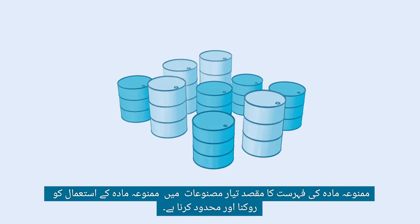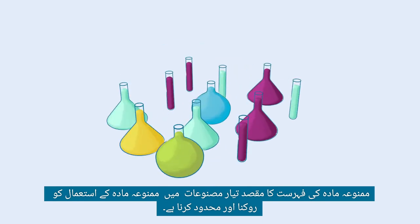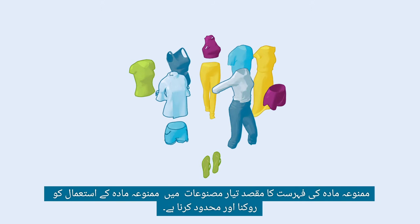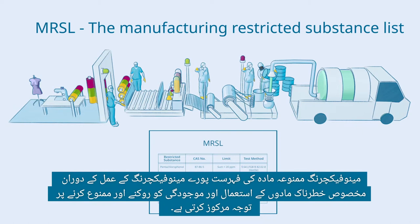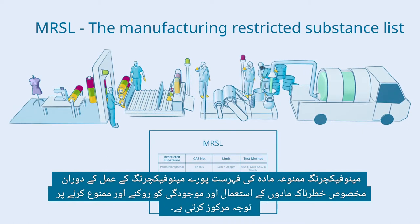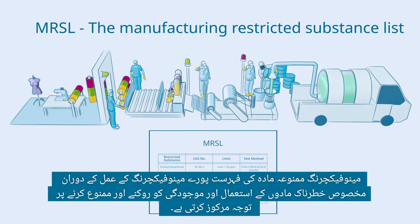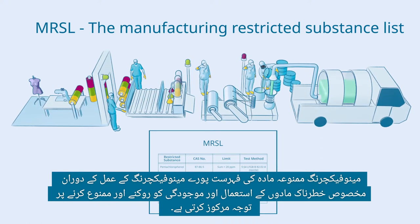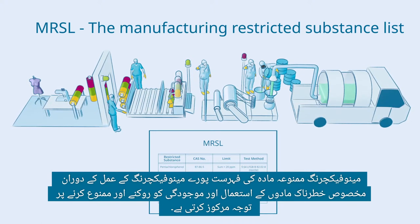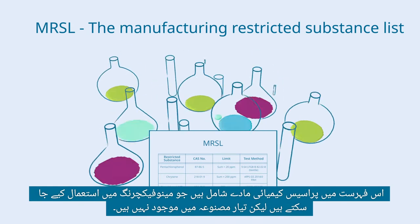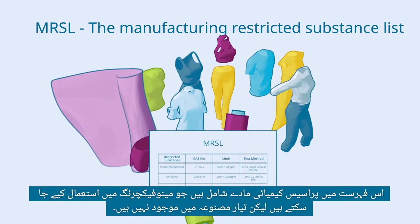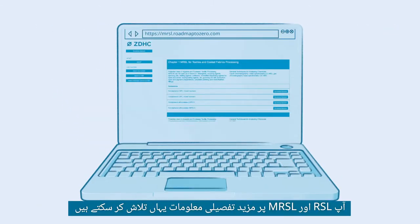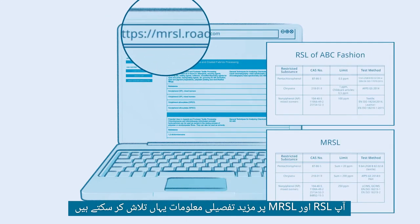The Restricted Substance List aims to prevent and limit the use of restricted substances in finished products. The Manufacturing Restricted Substance List focuses on preventing and restricting the usage and presence of specific hazardous substances throughout the entire manufacturing process. This list includes processed chemicals which may be used in manufacturing but are not present in the end product. You can find more detailed information on RSL and MRSL here.